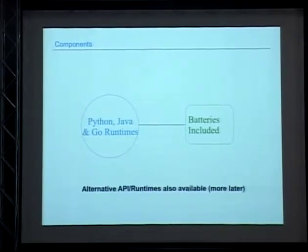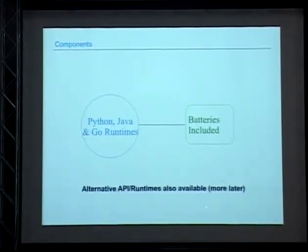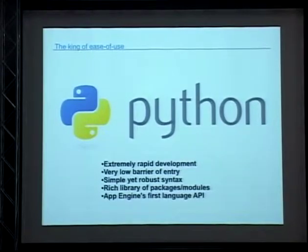For languages, we have Python and Java — those are considered 'batteries included' because they have libraries to build applications. We just added Go four months ago, so that's the newest one. Python was the very first runtime when App Engine launched in 2008, three years ago — chosen for ease of use, very fast development, low barrier to entry.